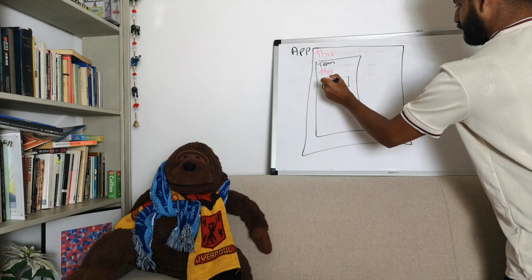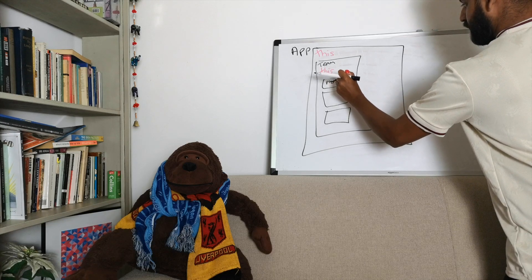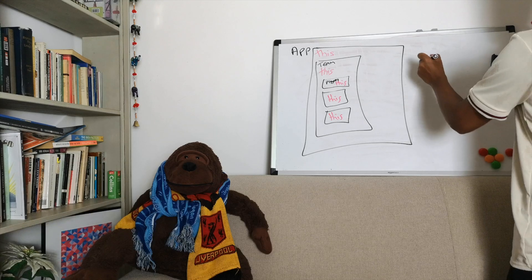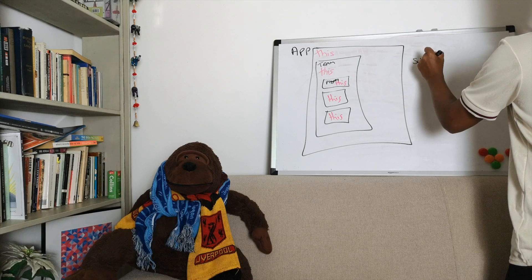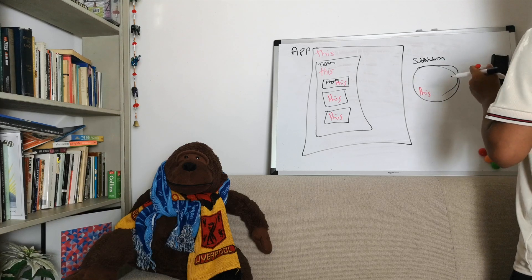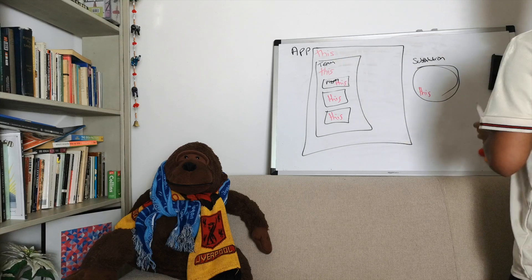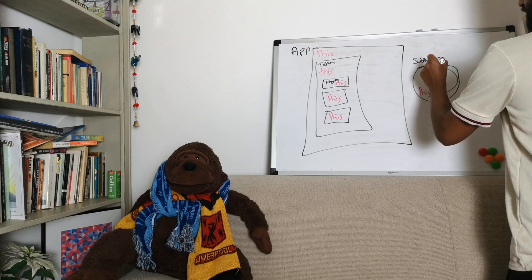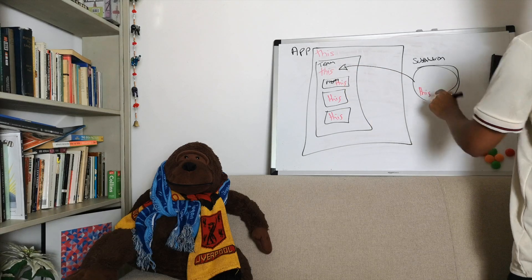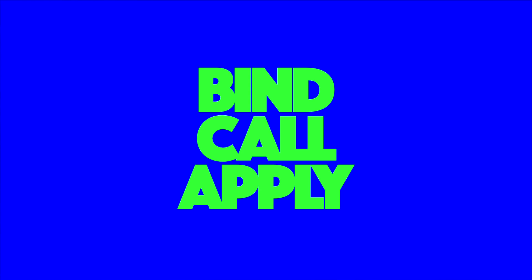Let's imagine we've got some players — these also have their own `this`. Now what we're trying to do is take this substitution function — which again has its own `this` — and apply, call, or bind it onto different contexts. So effectively we're trying to take this function and apply it or bind it to the team context, making this become `this`. That's where bind, call, and apply come into play.